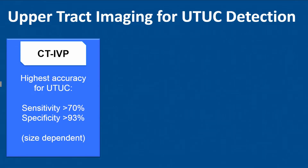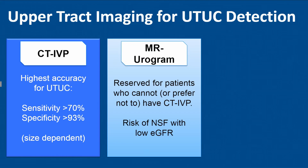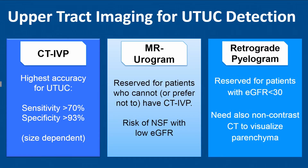Most patients will start with a CT scan. CT IVP or CT urogram is the best study for detecting upper tract urothelial carcinoma, with the best sensitivity and specificity compared to, for example, an MR urogram. The MR urogram we preserve mostly for patients who cannot have a CT, for example due to renal function or wanting to avoid radiation, though there is still a risk of nephrogenic systemic fibrosis with poor renal function. The third study, for patients with especially poor renal function who can't get either MR or CT, is a retrograde pyelogram, which needs to be done in addition to something like a non-contrast CT to look at the renal parenchyma, and it does have a lower sensitivity than the CT scan.